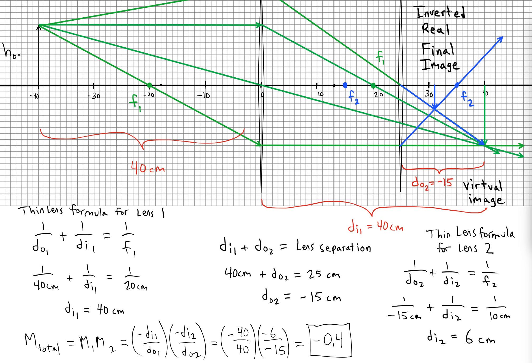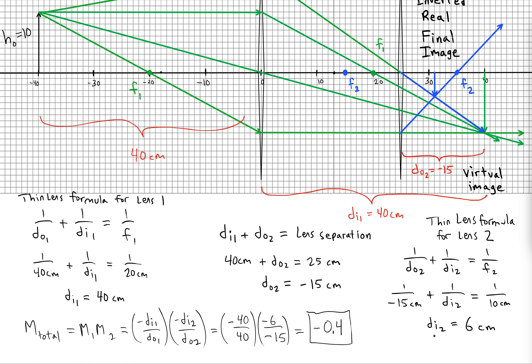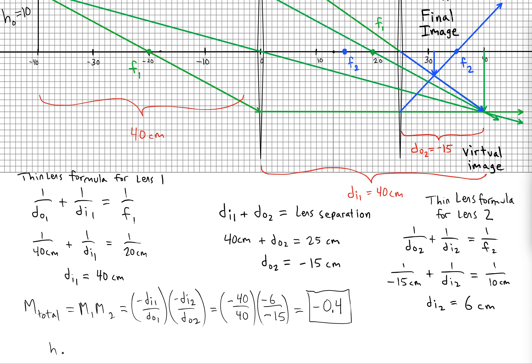And since our original object had a height of 10, our final object will have a height of 4. But it's negative because it's inverted.